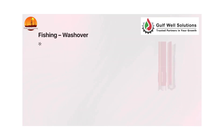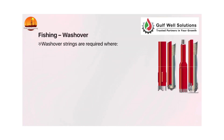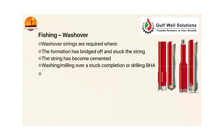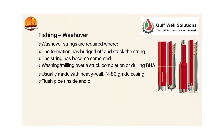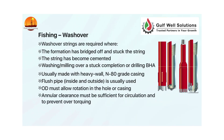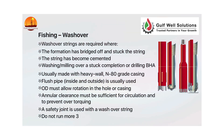Fishing — washover. Washover strings are required where the formation has bridged off and stuck the string, or where the string has become cemented, or for washing and milling over a stuck completion or drilling BHA. Usually made with heavy wall 80-grade casing. Flush pipe, inside and outside, is usually used. OD must allow rotation in the hole or casing. Annular clearance must be sufficient for circulation and to prevent over-torquing. A safety joint is used with a washover string. Do not run more than 30 to 50 meters of washover string at once.